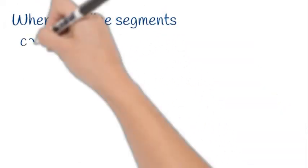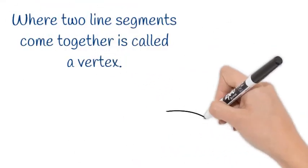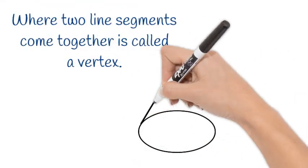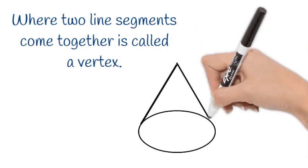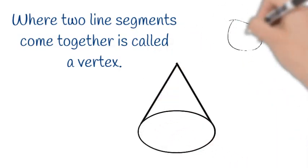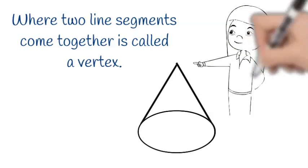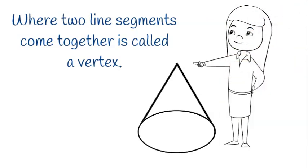Where two line segments come together is called a vertex. There it is. A cone has one vertex.